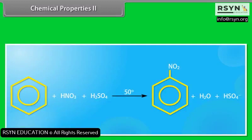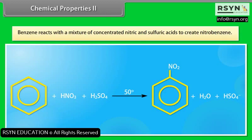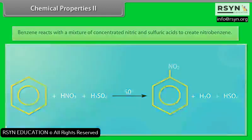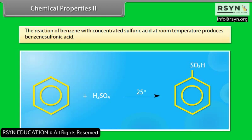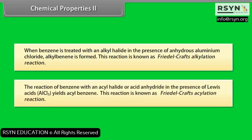In another example of an electrophilic aromatic substitution reaction, benzene reacts with a mixture of concentrated nitric and sulfuric acids to create nitrobenzene. The reaction of benzene with concentrated sulfuric acid at room temperature produces benzene sulfonic acid. When benzene is treated with an alkyl halide in the presence of anhydrous aluminum chloride, alkylbenzene is formed — this is known as Friedel-Crafts alkylation reaction. The reaction of benzene with an acyl halide or acid anhydride in the presence of Lewis acid (AlCl₃) yields acylbenzene — this is known as Friedel-Crafts acylation reaction.